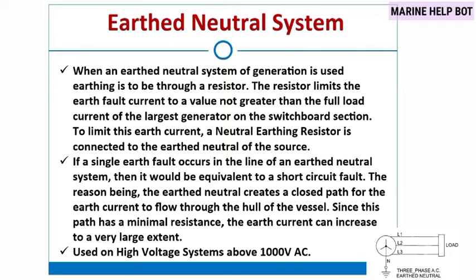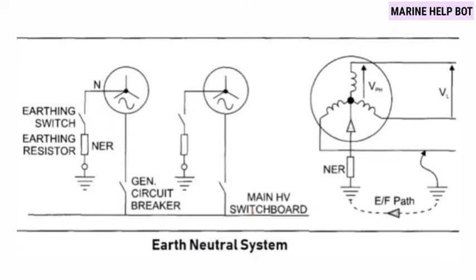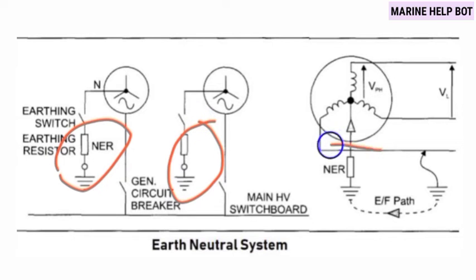In the insulated neutral system, if there was a single fault nothing happened, but a second fault would create a short circuit. However, in the earth neutral system, if there is a single earth fault it will also behave like a short circuit and trip the circuit. This is the main difference between both systems. Here you can see the earth neutral system circuit, and we have a neutral earth resistor for earthing — these resistors are used to limit the earth fault current.